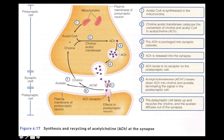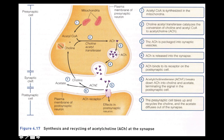When the acetylcholine binds to the receptor, it doesn't stay there forever. There's an enzyme called acetylcholinesterase (AChE) that hydrolyzes acetylcholine into choline and acetate, terminating the signal. The acetate leaves, but the choline is recycled — the presynaptic neuron takes up the choline and uses it again for acetylcholine synthesis.